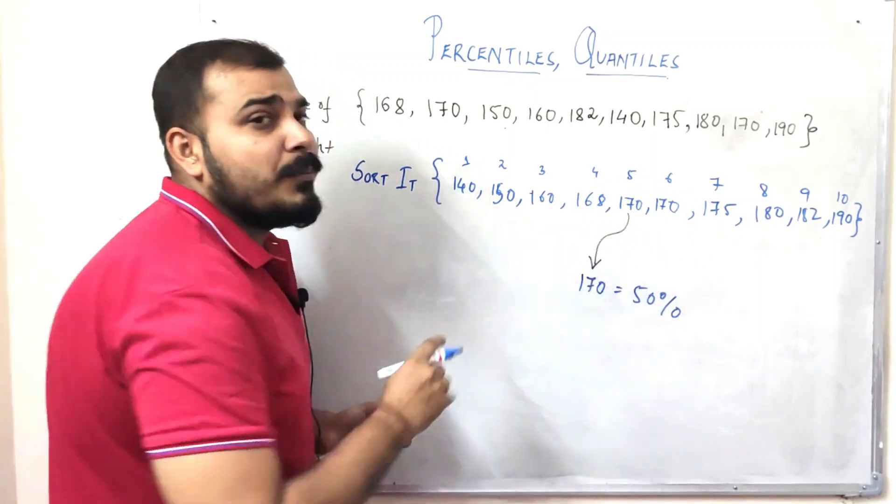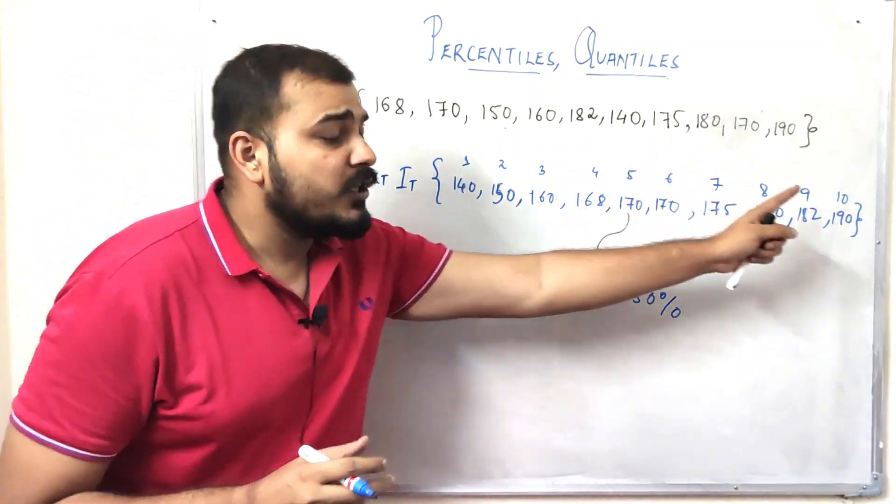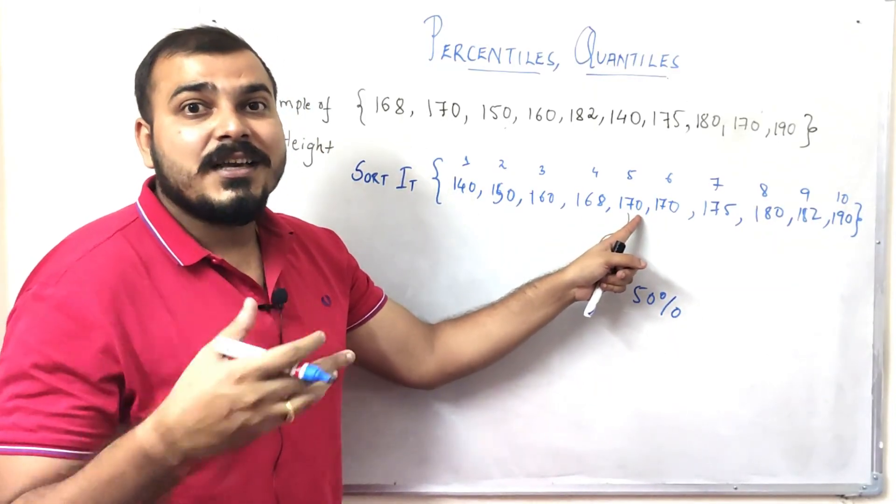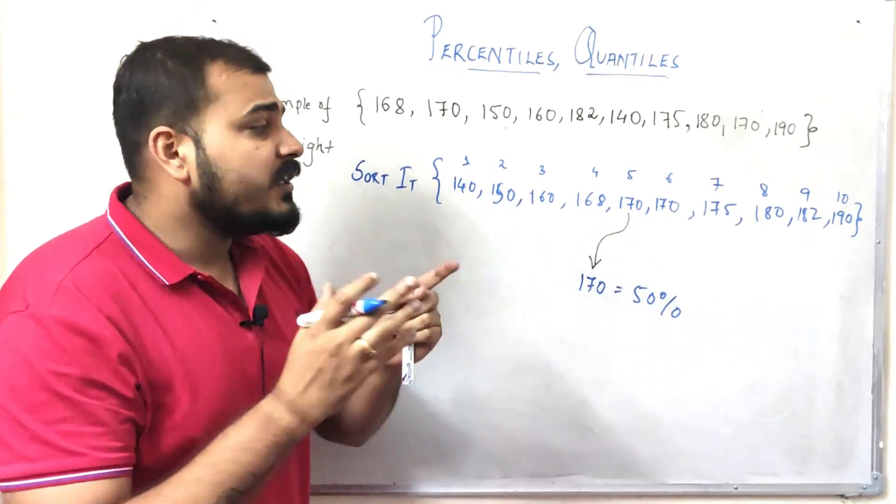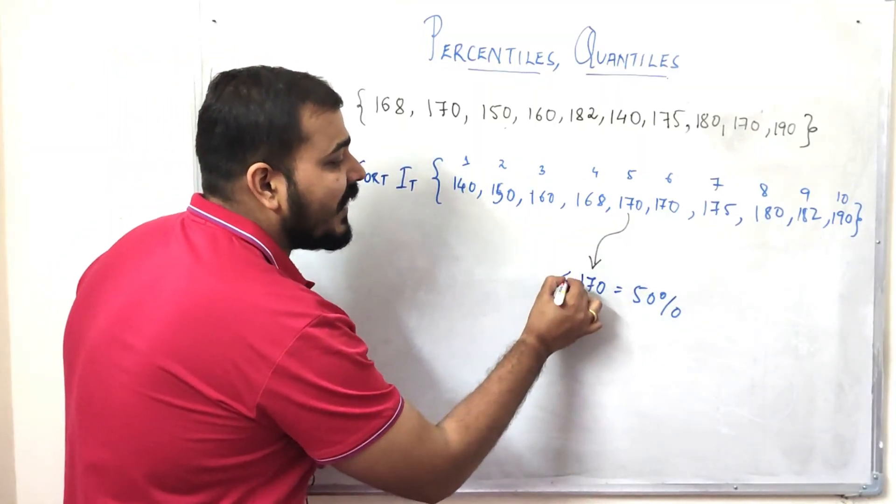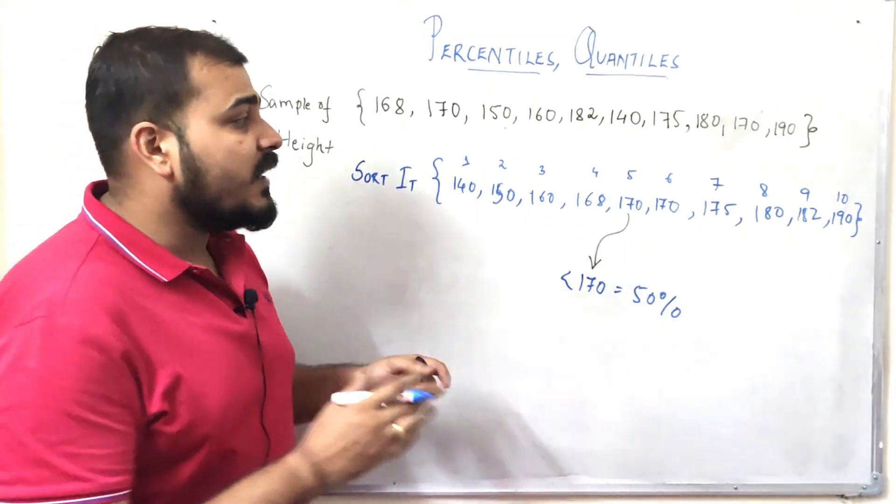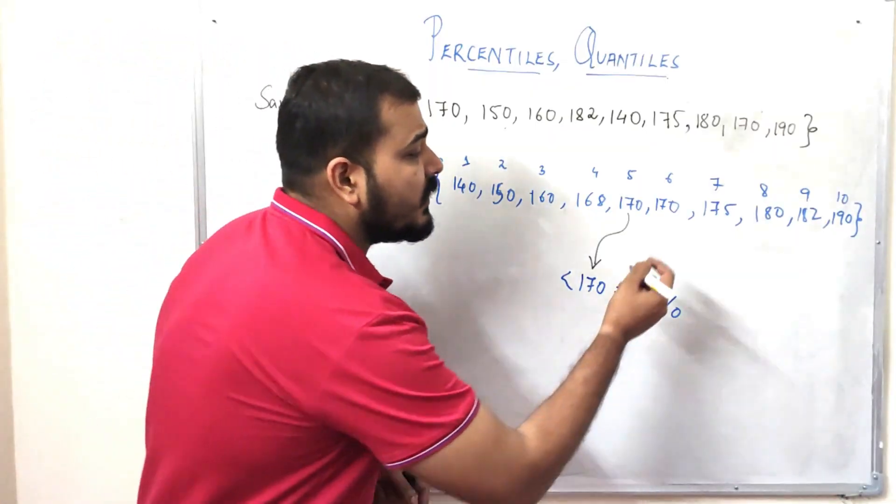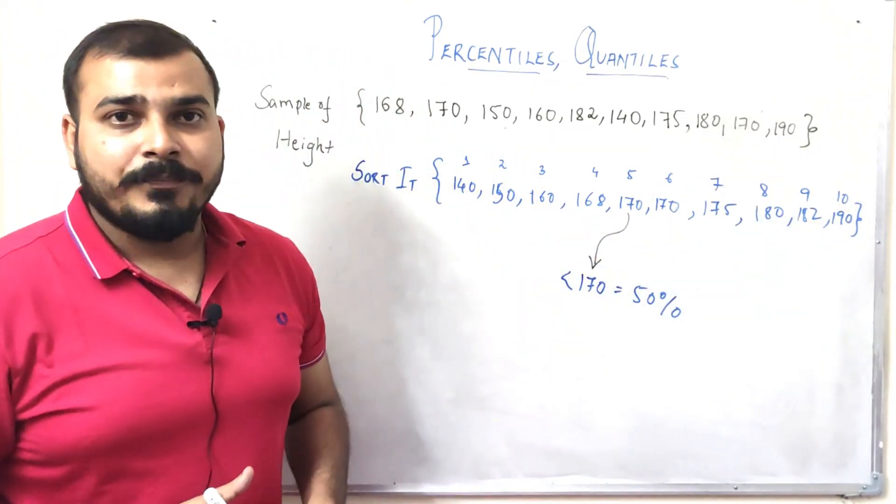Let me explain what this exactly means. Suppose the fifth student has got 170 marks. In this distribution of only 10 students, I can call this person as getting 50th percentile, which indicates that 50 percent of the values are less than 170, and 50 percent of values are greater than 170.